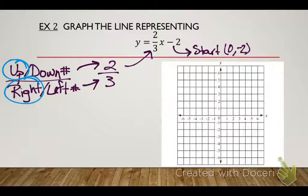I'm going to start at 0, negative 2. Plot a point. And then I'm going to move up 2, right 3. Plot a point. And continue.